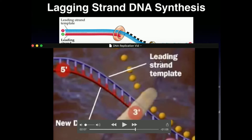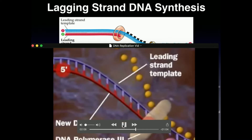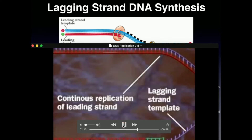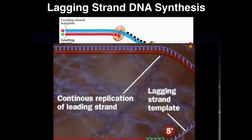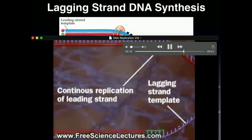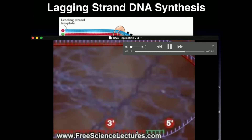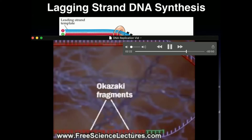Now I'm going to go to a video and explain it as we go. This right here is the leading strand — it's going to synthesize continuously from 5' to 3', pretty simply. The lagging strand, on the other hand, is discontinuous. Down here we have the lagging strand of the DNA. In this video, the red parts are Okazaki fragments — the DNA fragments — and these green parts are RNA primers.